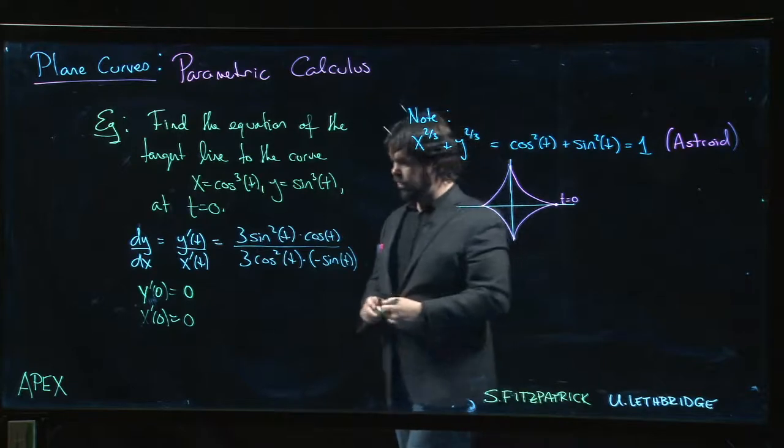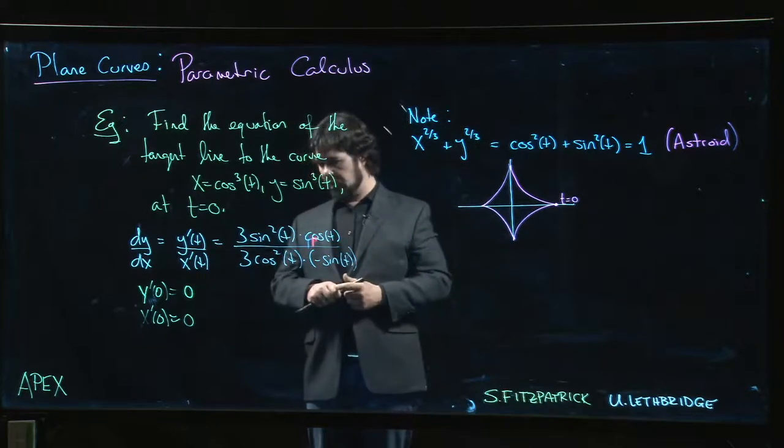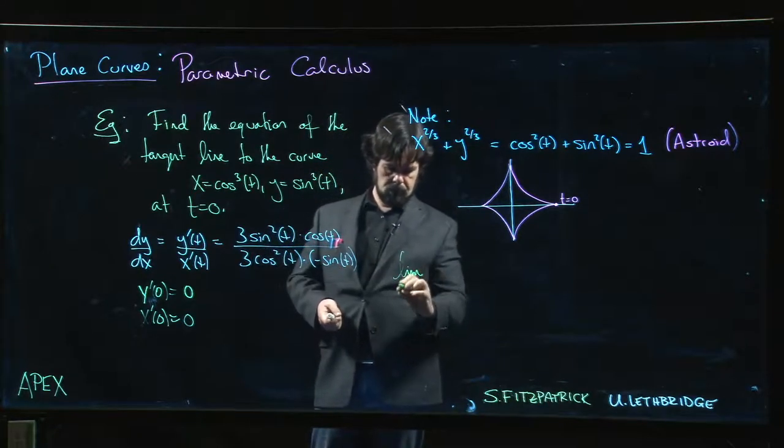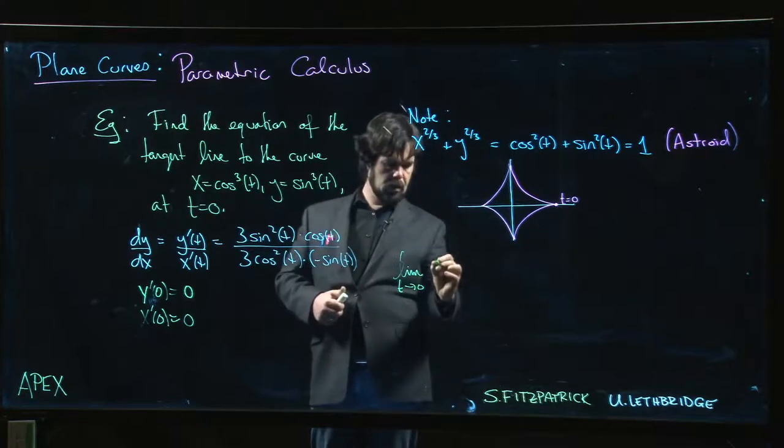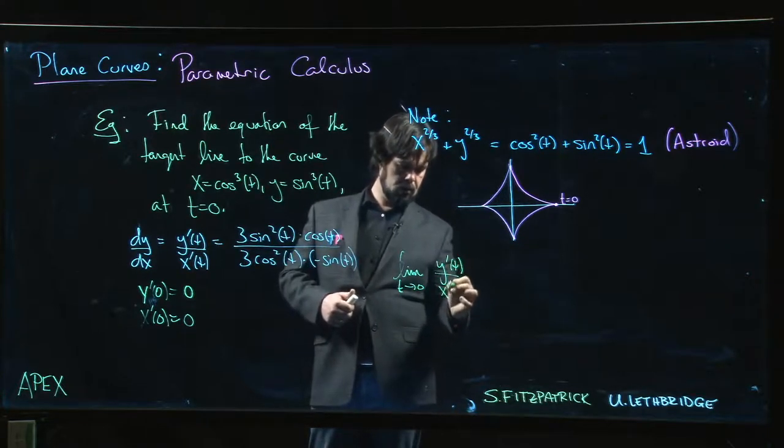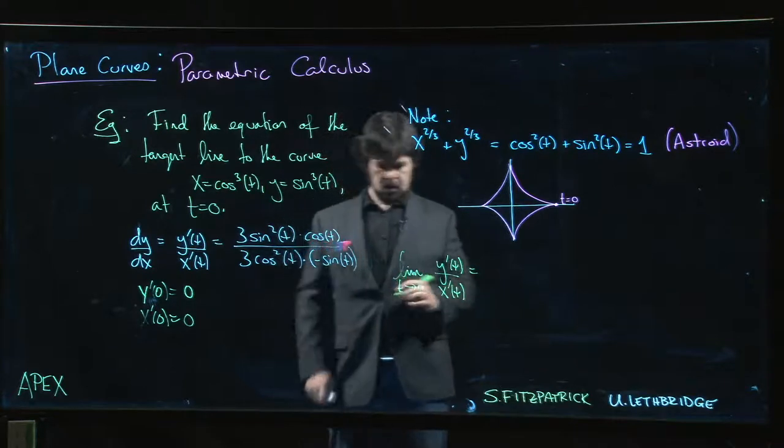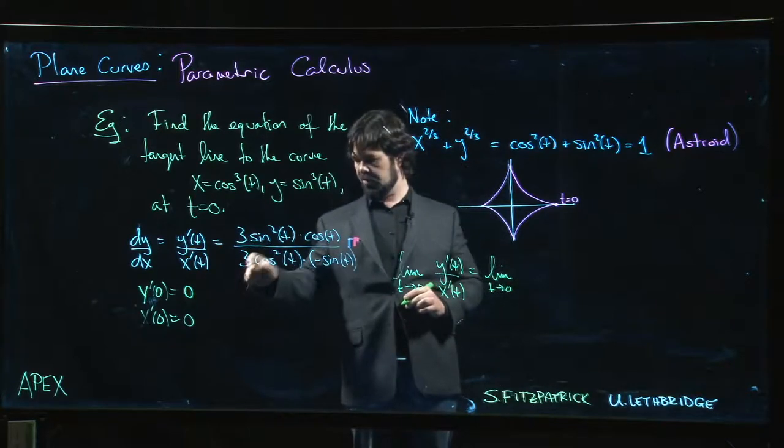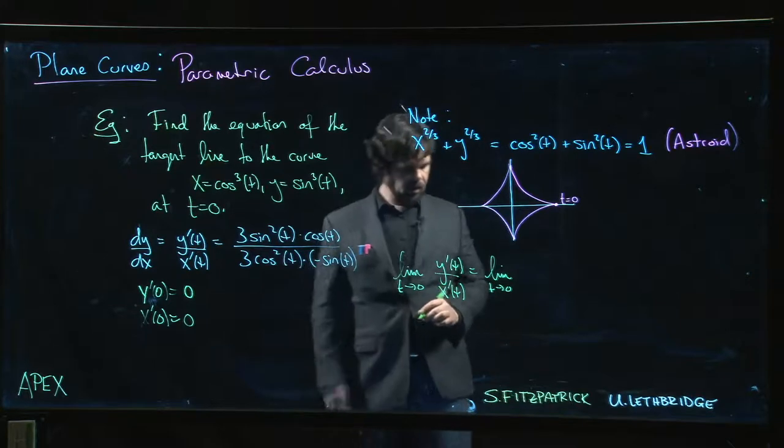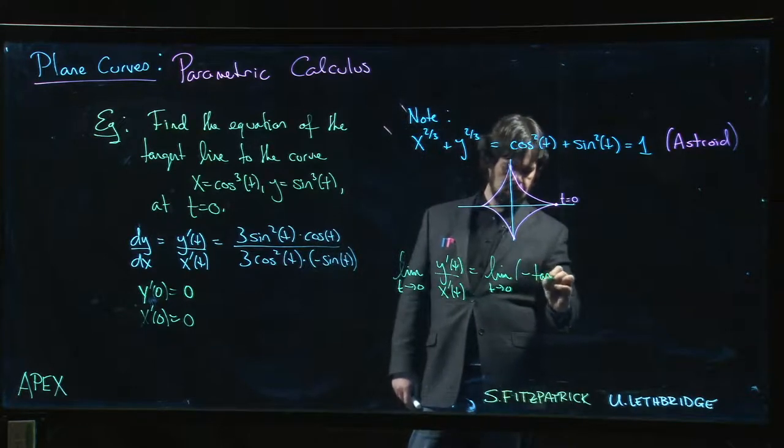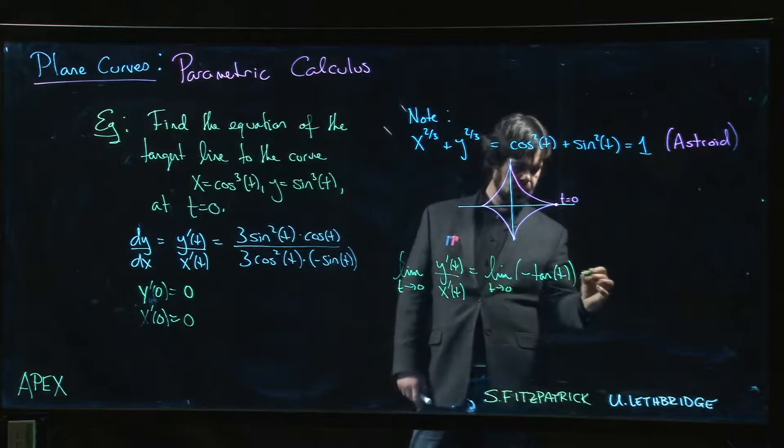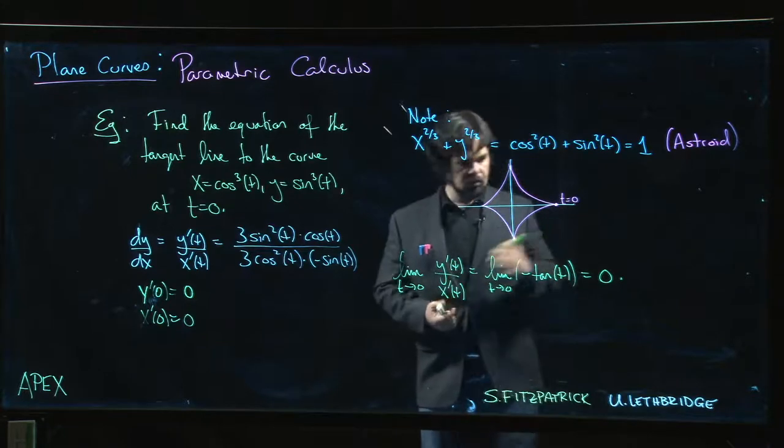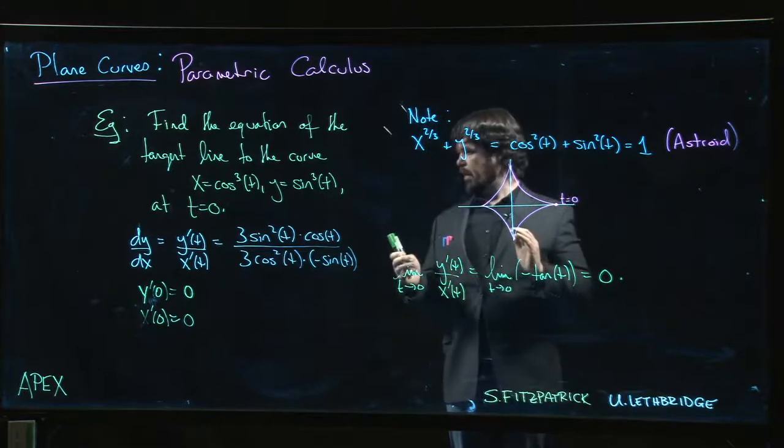But we can still do something here. We can still talk about what value the slope approaches as we get to that point. So dy/dx is undefined. On the other hand, I could consider the limit as t goes to zero of y prime of t over x prime of t. That gives me the limit as t goes to zero—cancel the threes, cancel a cosine, cancel a sine—I get minus tan t, and of course that limit is zero.